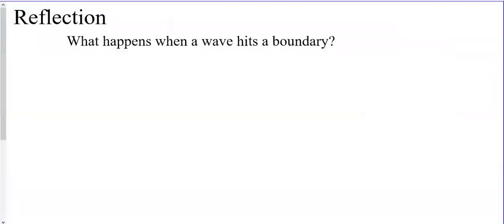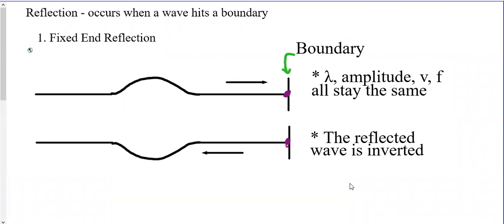For a fixed end reflection: any crest traveling toward a fixed boundary will reflect back in the exact opposite orientation. The amplitude, wavelength, speed, and frequency all remain the same — the only thing that changes is the orientation of the amplitude. A positive amplitude becomes negative on reflection. If you sent a crest then a trough, it would reflect back as a trough then a crest.